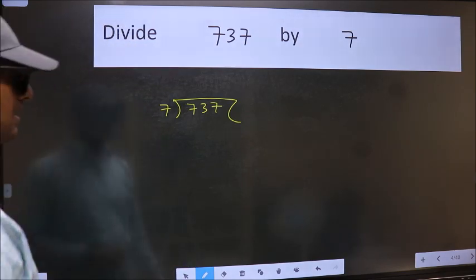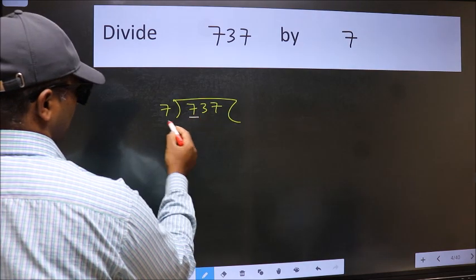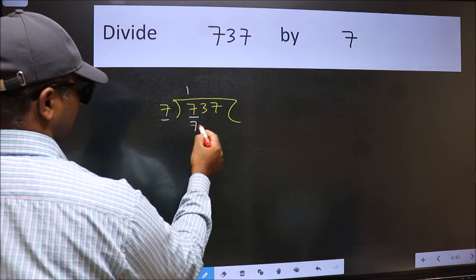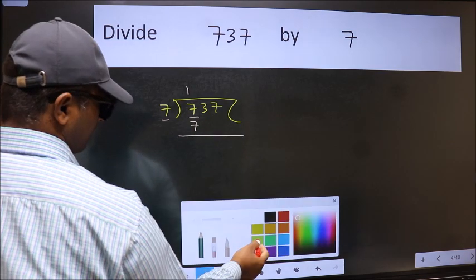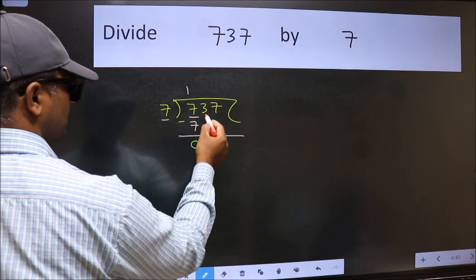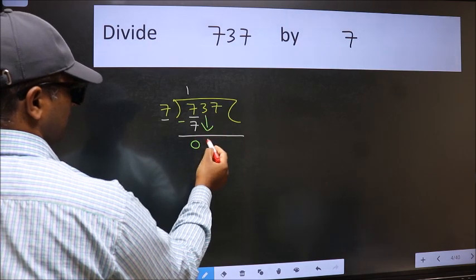Next, here we have 7 and here 7. When do we get 7 in the 7 table? 7 once 7. Now we should subtract. We get 0. After this, bring down the beside number. So 3 down.